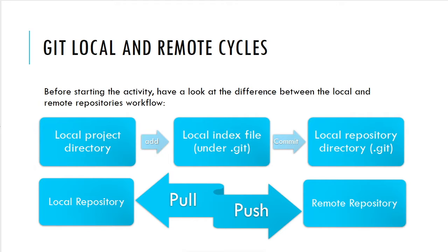Before starting the activity of creating a new remote repository, let's have a look at the difference between the local and remote repository workflows. The local project directory is the local repository we worked with in the previous section. When you add files to the repository or to the index file under the .git hidden directory, those files are put in what's called the staging area — the preparation area where all the files that need to be committed are placed.